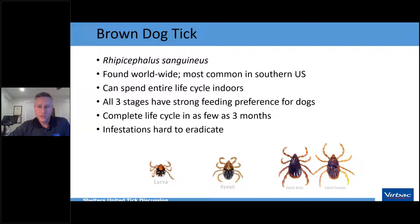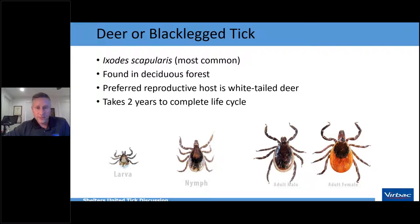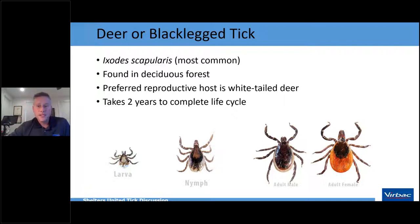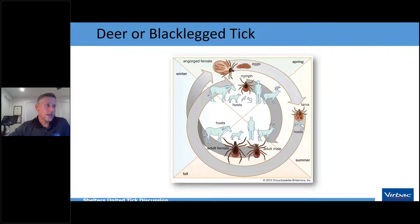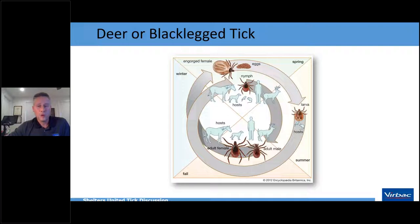The deer tick or black-legged tick (Ixodes) prefers deciduous forests and its preferred reproductive host is the white-tailed deer, so it follows deer populations. Its life cycle can take up to two years to complete. Larvae prefer small rodents or birds for their first blood meal, nymphs are more indiscriminate, and adults particularly favor white-tailed deer, humans, dogs, horses, and cats.